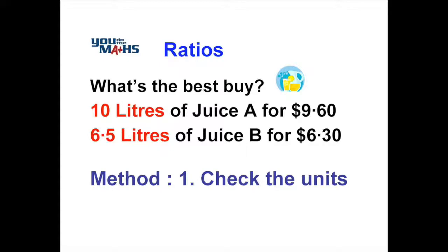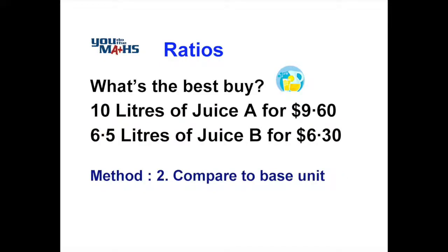If we look at the cost, they're already in dollars so there's no need to change those. We'll leave those two amounts as nine dollars sixty and six dollars thirty, but if they were different we'd have to make sure they were the same units as well. The next thing to do is to compare the base unit — look at the number of litres and find the cost for one litre of each amount.